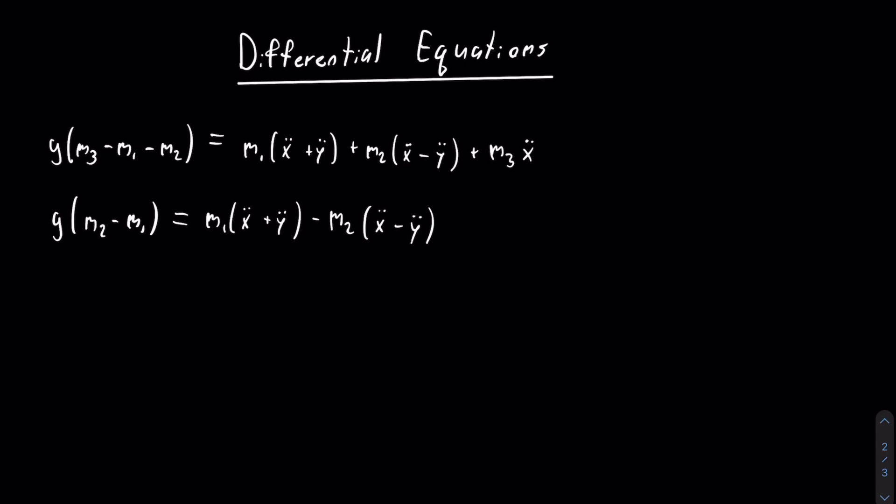We ended off last video with these two equations. These two equations just have two variables, which means that we can solve them to solve for each coordinate. And after we solve for the coordinates, we can then use that to find the equations of motion for each mass.